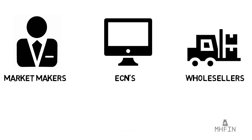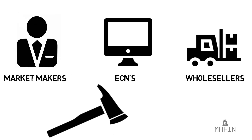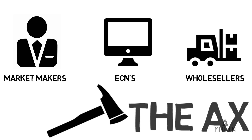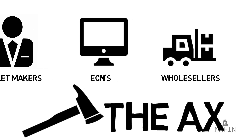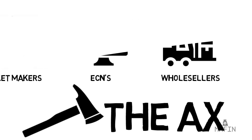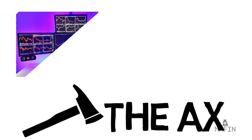Now out of these players, there will be one market maker in particular classified by traders as the axe. This is the market maker that controls the price action in a given stock. You can find out which market maker this is by watching the Level 2 action for a few days. This market maker who consistently dominates the price action is the axe. Many day traders will simply follow the actions of the axe, as it can result in a high probability of success.